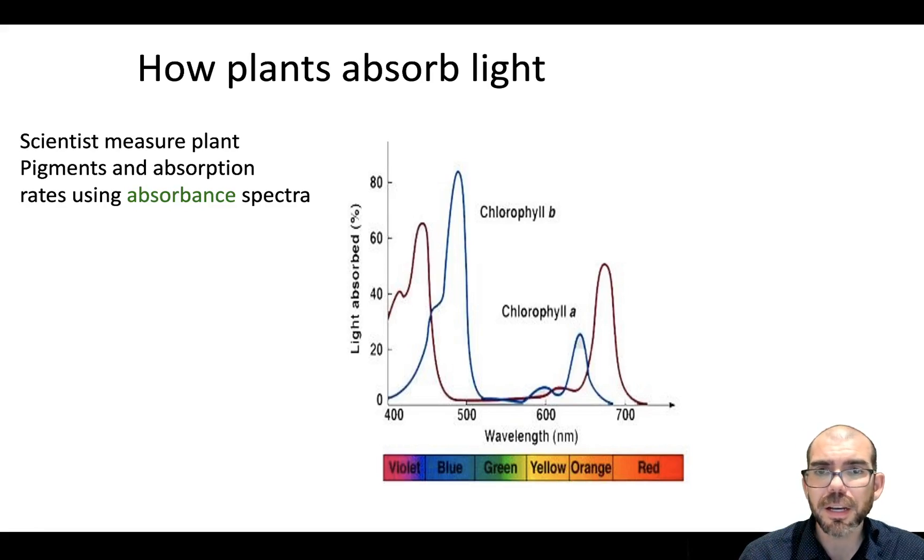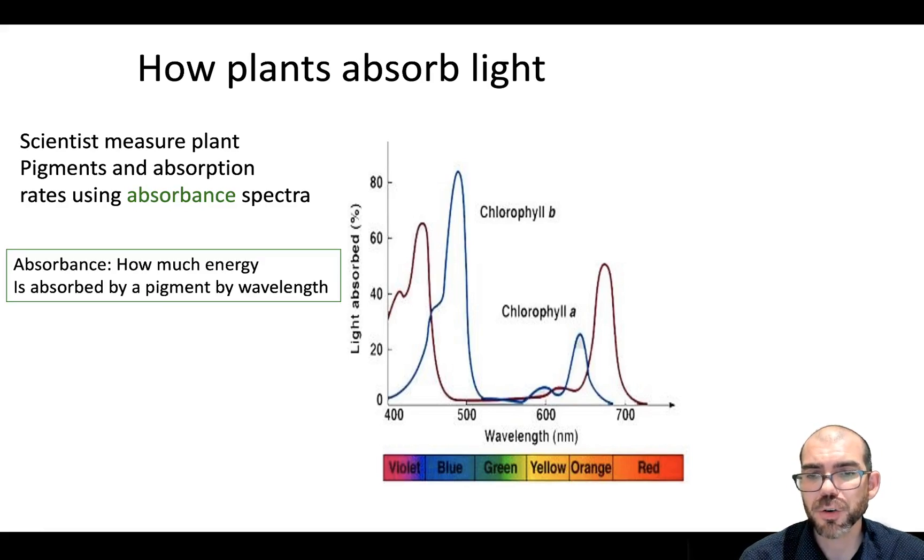If we want to determine what frequencies of light a plant is absorbing, we can generate an image like this, which is known as an absorbance spectra. An absorbance spectra is just demonstrating how much energy is absorbed by a pigment based on its wavelength. So looking at this graph here, it's showing me that this chlorophyll is absorbing a lot of blue and green and a little bit of orange. And this chlorophyll is absorbing a lot of orange and red and a lot of violet and blue. So the higher the peak, the more of that wavelength that's being absorbed.